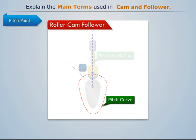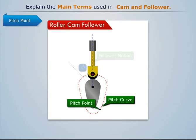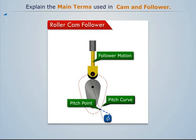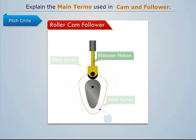Pitch point: it is a point on the pitch curve having the maximum pressure angle. Pitch circle: it is a circle drawn from the center of the cam through the pitch point.